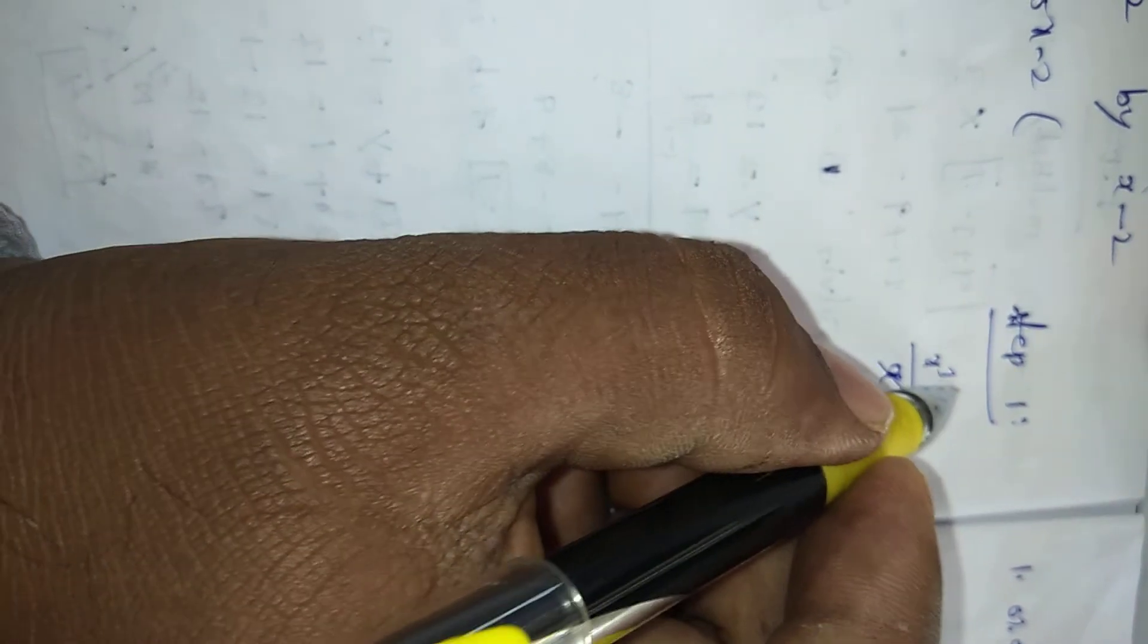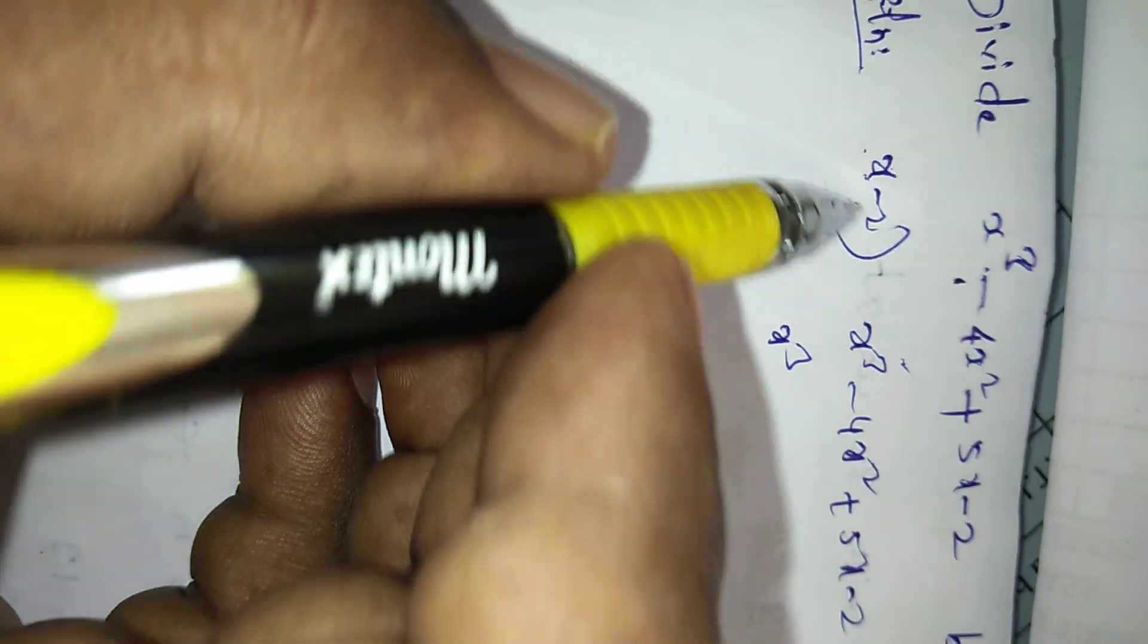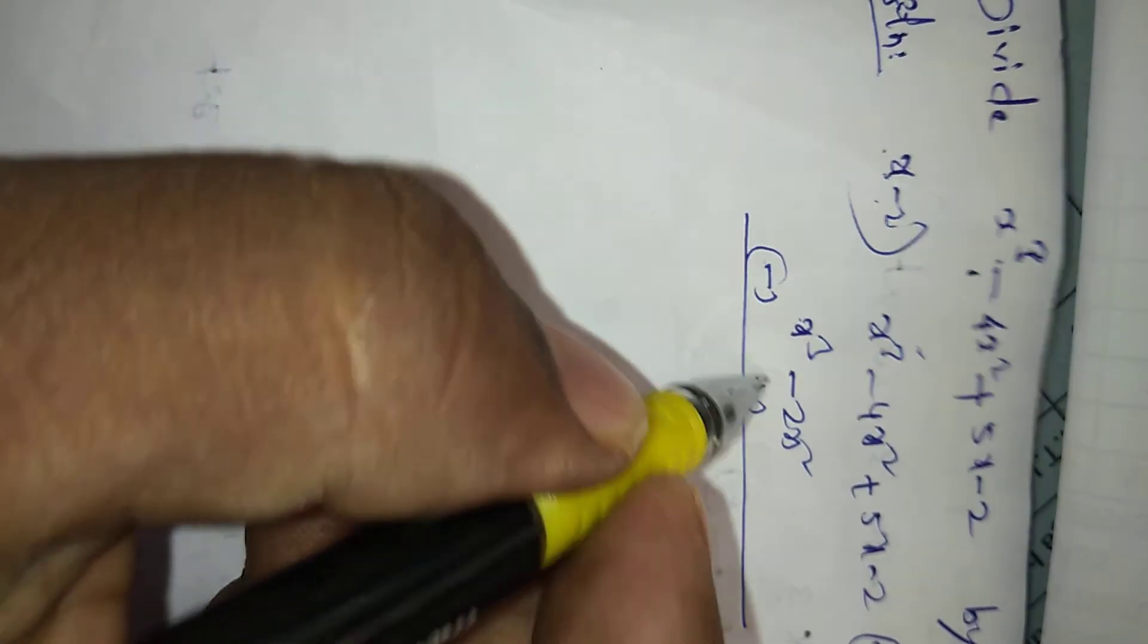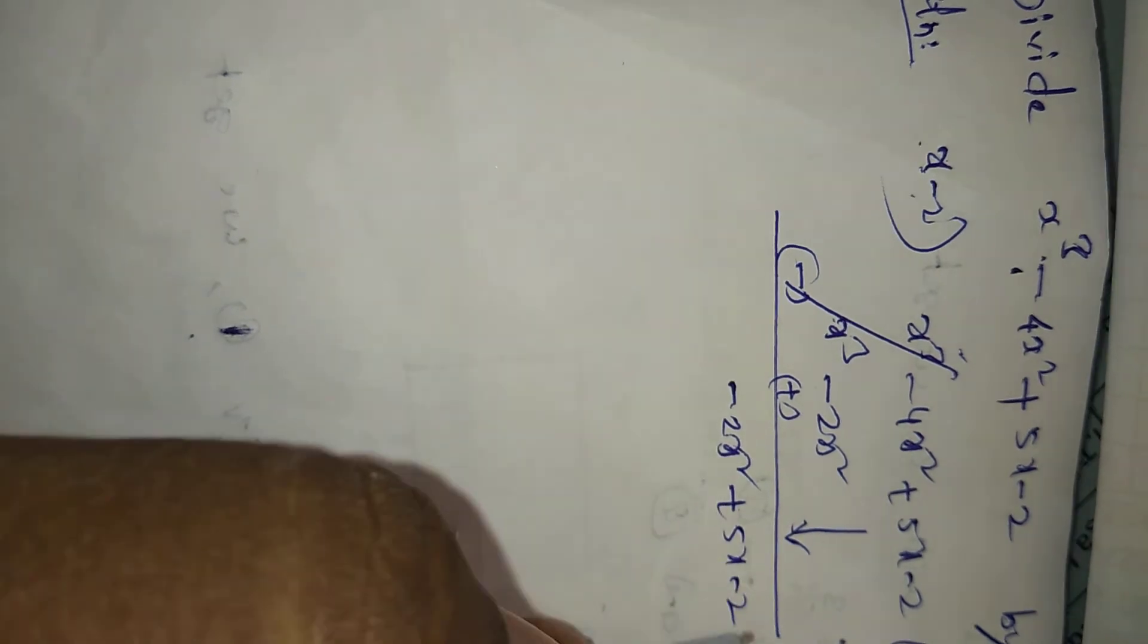Step 1. In dividend, the first term is x cube. In divisor, x. x cube by x, x two times, x square is remaining. We can write here: x into x square, x cube minus 2 into x square, minus 2x square. The symbols can change: plus becomes minus, minus becomes plus. These two are cancelled. Minus 4 plus 2, which means minus 2x square, bring down plus 5x minus 2.